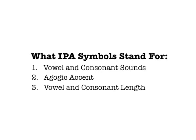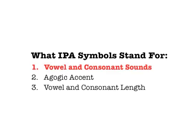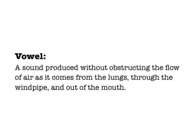The three main things that IPA symbols can help us figure out are vowel and consonant sounds, agogic accent, and vowel and consonant length. I'm going to talk a little bit about each of those things, starting with vowel and consonant sounds. Most IPA symbols are the letter-like symbols that are used to spell out the actual sounds of a language. The IPA has symbols for both vowel sounds and consonant sounds. A vowel sound for our purposes is a sound made without obstructing the flow of air from your lungs as it goes up your windpipe and out your mouth.